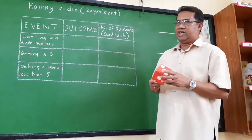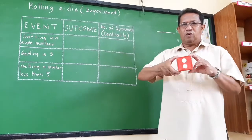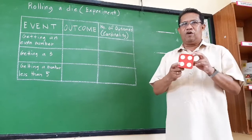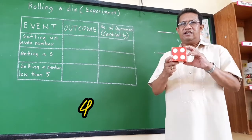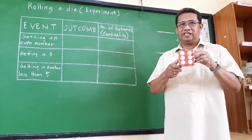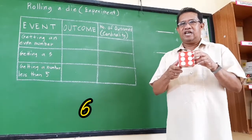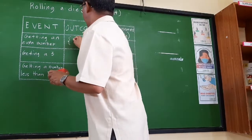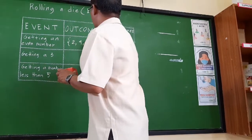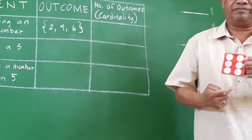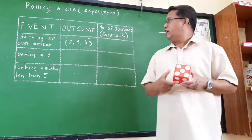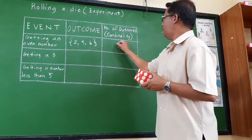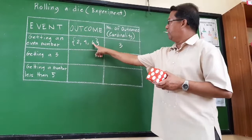The even numbers are 2, 4, and 6. So these are the even numbers. How many outcomes are there? We have 3 outcomes — 1, 2, 3.